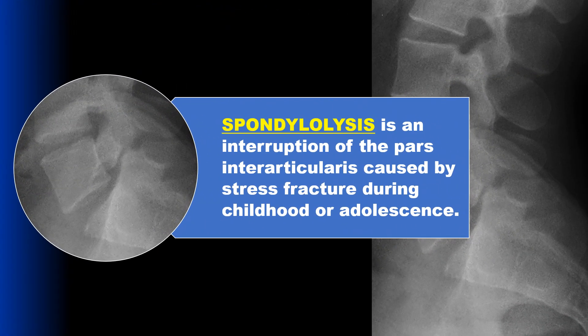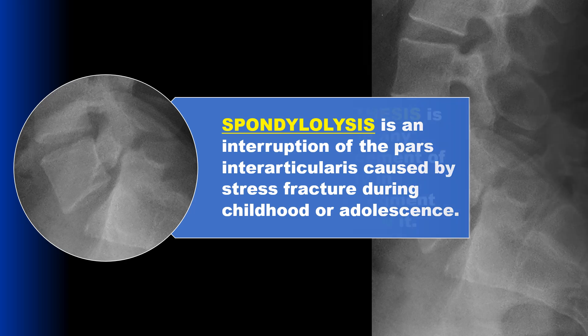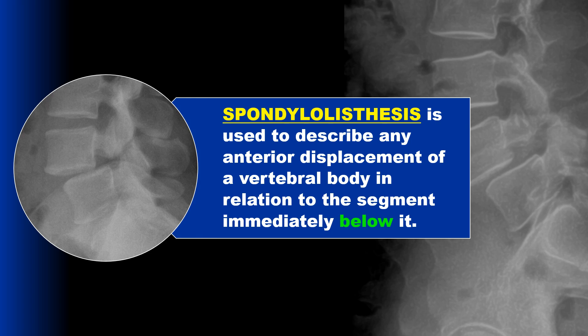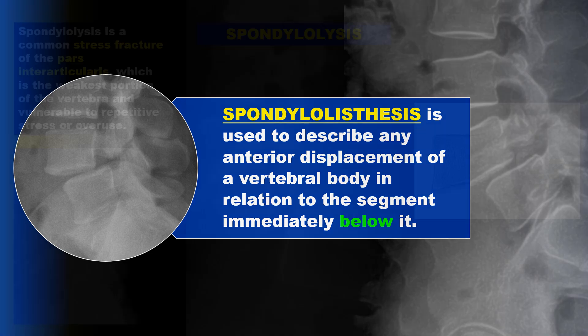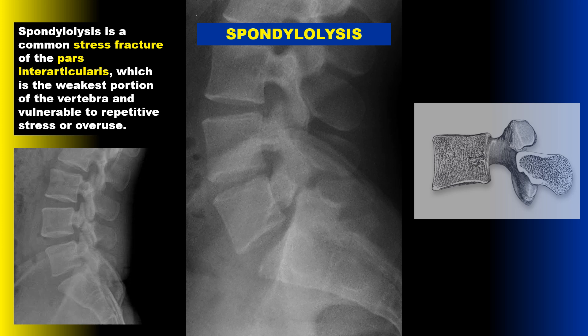For the next fracture, we have to review two terms. First is spondylolysis, which is an interruption of the pars interarticularis caused by a stress fracture during childhood or adolescence. Spondylolisthesis is a term used to describe any anterior displacement of a vertebral body in relation to the segment immediately below it. Spondylolysis is a common stress fracture of the pars interarticularis, which is the weakest portion of the vertebral segment and vulnerable to repetitive stress or overuse.